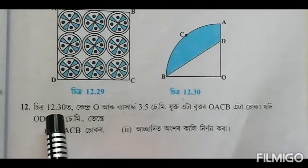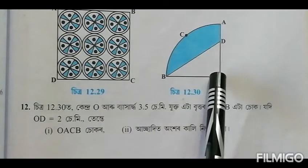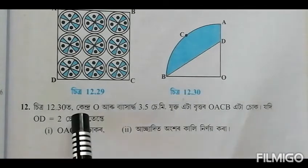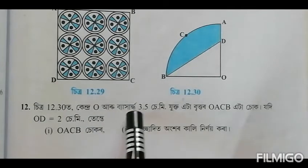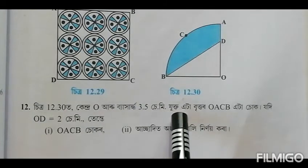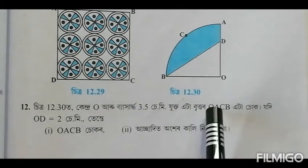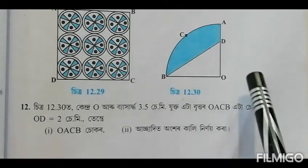In Exercise 12.3, we have a quadrant OACB with radius 3.5 cm. We need to find the area of the figure.